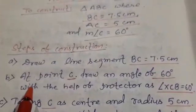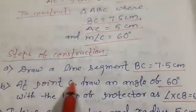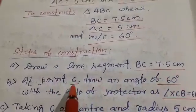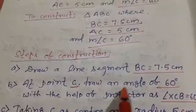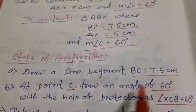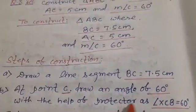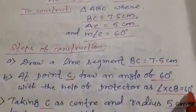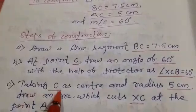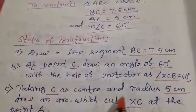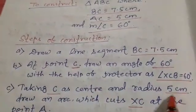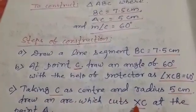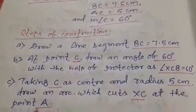First, draw a line segment BC equal to 7.5 cm. At point C draw an angle of 60 degree with the help of protector as angle XCB equal to 60 degree. Now taking C as center and radius 5 cm, draw an arc which cuts XC at the point A.